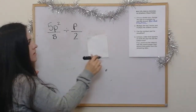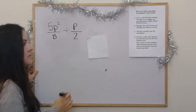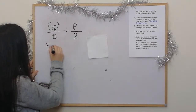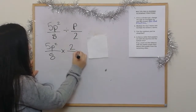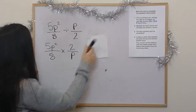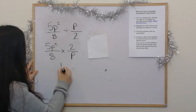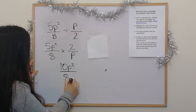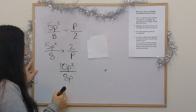In this next example, step 1: it is a divide, so we change it to a multiply and flip or invert the second fraction. The next step is to multiply the top two terms and the bottom two. So 5P squared times 2 becomes 10P squared, and 8 times P becomes 8P.